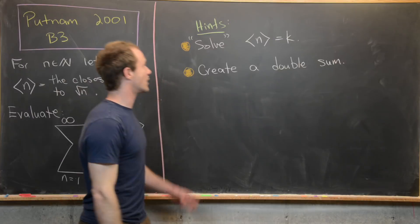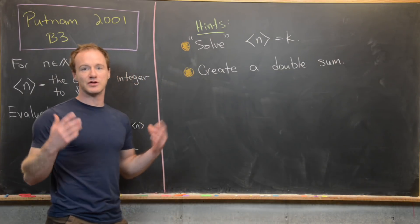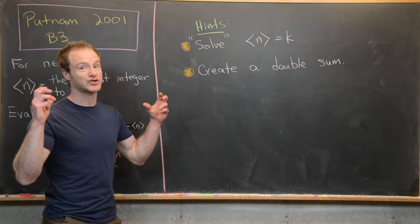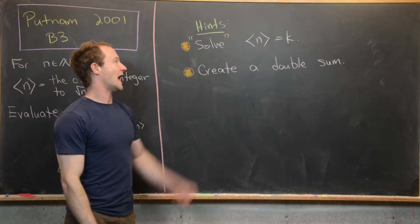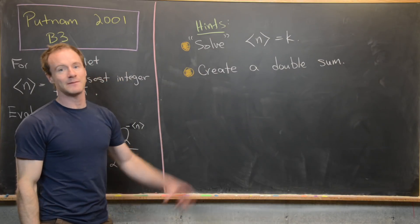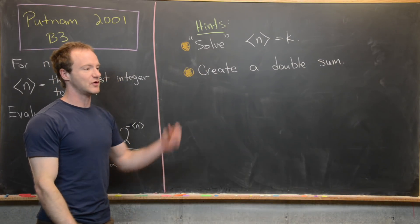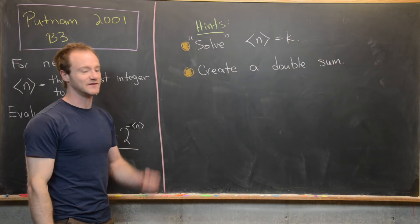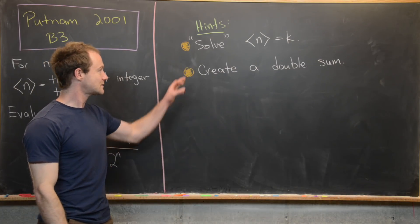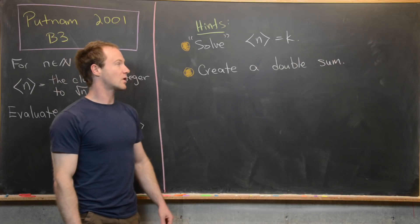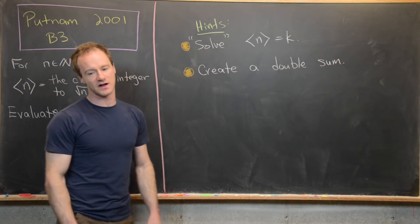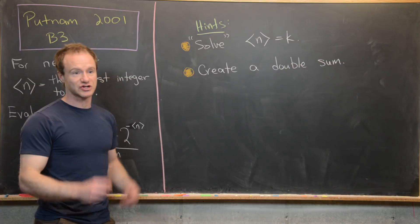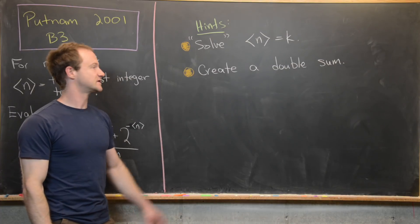Before we get going, I want to give some hints so you can try it on your own first. The first hint is to solve the equation angle bracket n equals k, which will give you a range of n values that achieve the same k value. We're then going to use that to create a double sum, and from there it's really just plugging and chugging and working with summations.